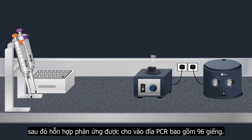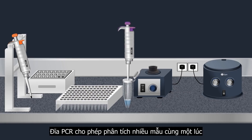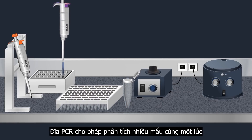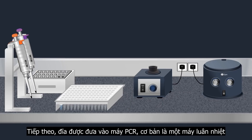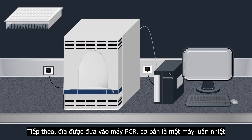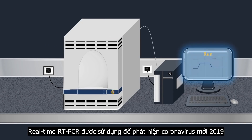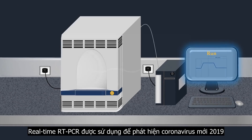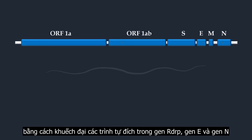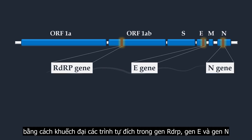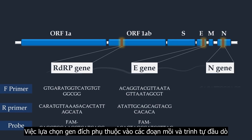Then the reaction mixture is loaded into a PCR plate, which generally contains 96 wells, allowing the analysis of several samples at the same time. Next, the plate is placed in a PCR machine, which is essentially a thermal cycler. Real-time RT-PCR is used for the detection of the new coronavirus 2019, by amplification of target sequences in the RDRP gene, the E gene, and the N gene. The choice of target gene depends on the primers and the probe sequences.